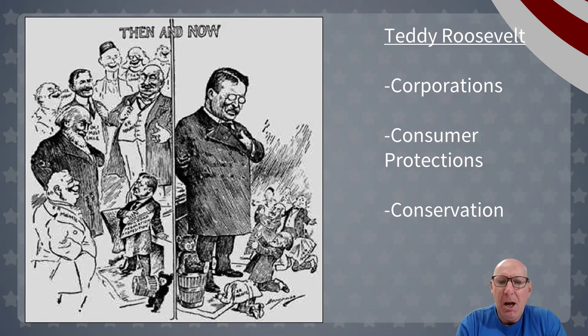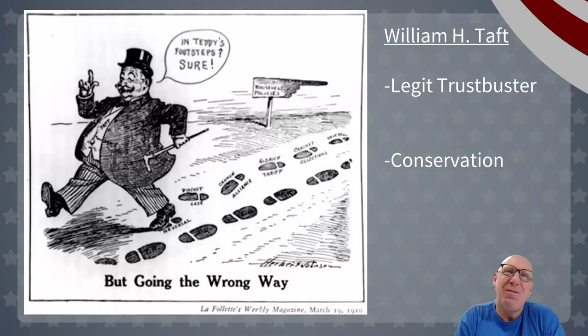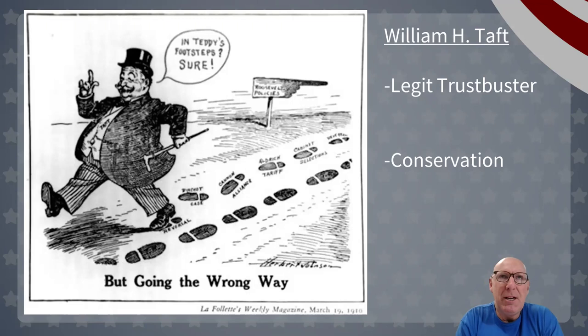The second progressive president is William Howard Taft, who was Teddy Roosevelt's vice president. Voters expected him to continue Roosevelt's legacy, but he went his own direction. Ironically, Taft busted trusts at twice the rate that Teddy Roosevelt did — so while Roosevelt is often called the great trust buster, that title more accurately belongs to Taft. He also continued the conservationist policies of his predecessor.